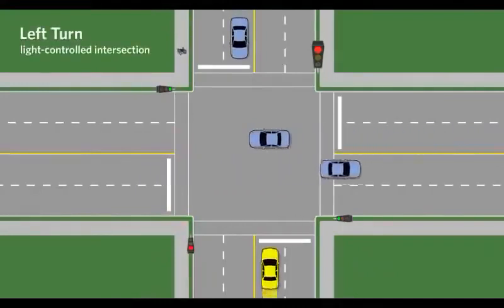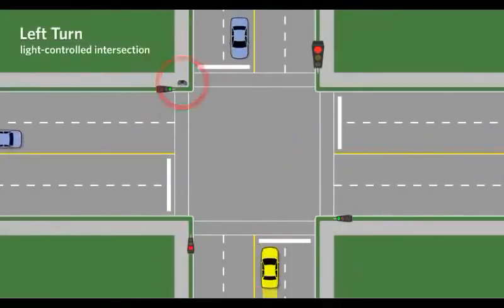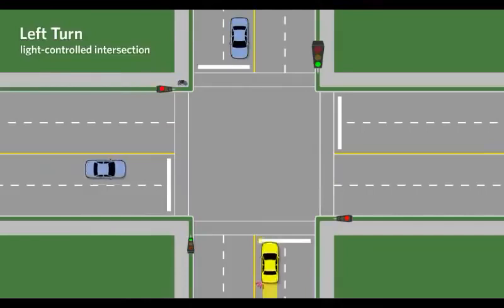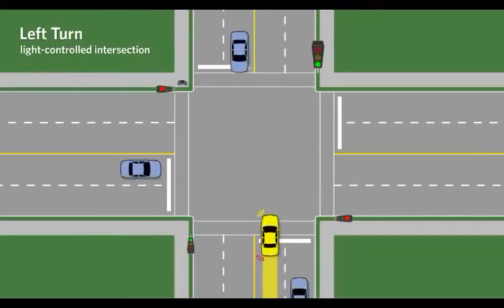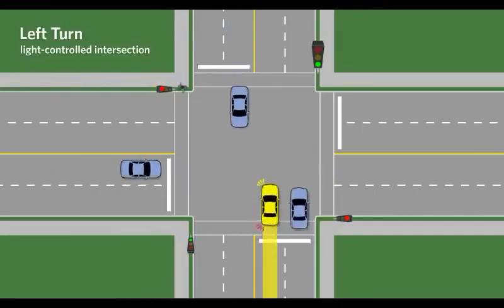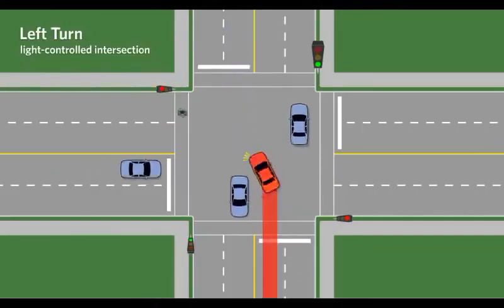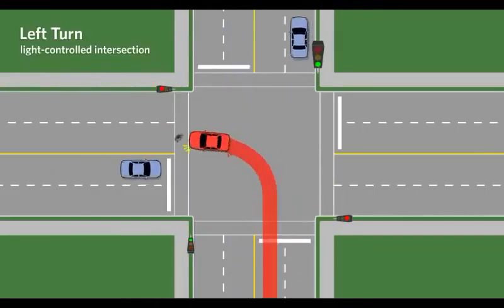Advancing when the light is green but failing to shoulder check for pedestrians at the crosswalk results in a situation of failing to yield to pedestrians and oncoming vehicles.